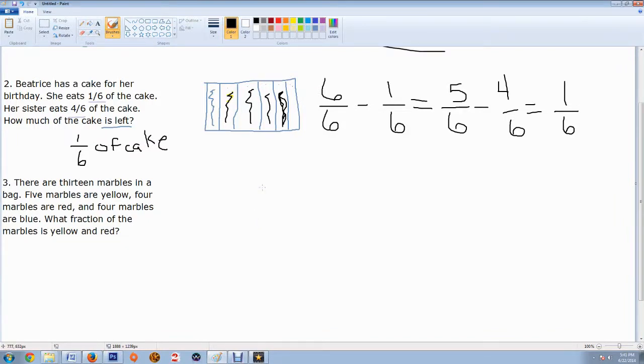All right, now this one's a little bit trickier. So there are 13 marbles in a bag. Five marbles are yellow. All right, so let's just kind of pay attention to this. Five marbles are yellow, four marbles are red, and four marbles are blue. What fraction of the marbles is yellow and red?